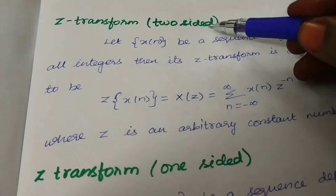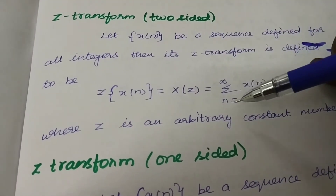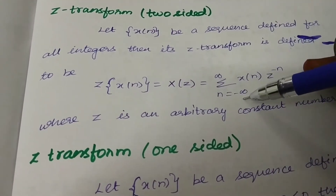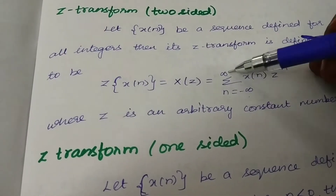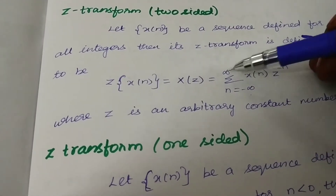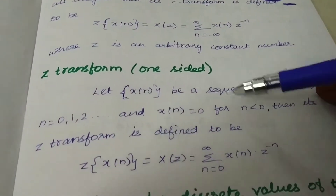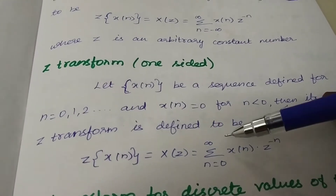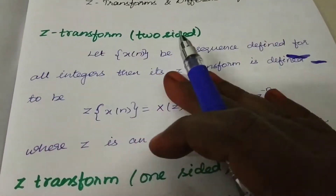For 2-sided Z-Transforms, the limit is n equal to minus infinity to plus infinity in the summation. For 1-sided, it is 0 to infinity. So first, the definition part — 2 kinds of differences are there.